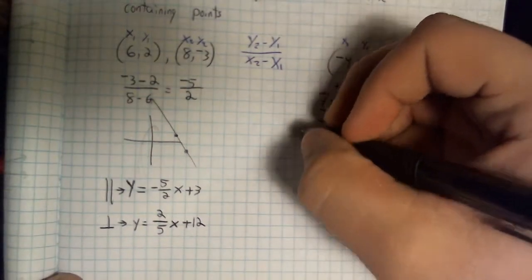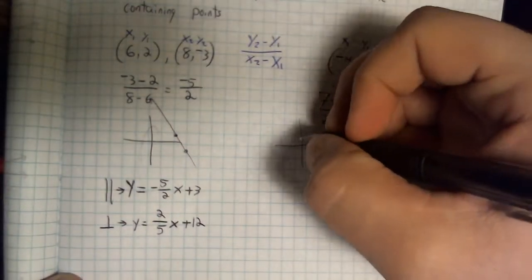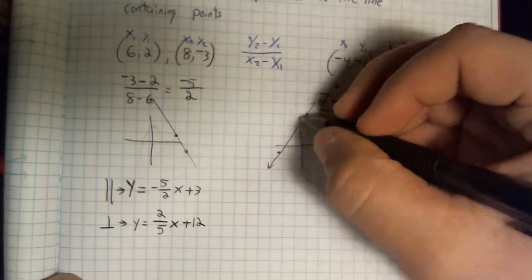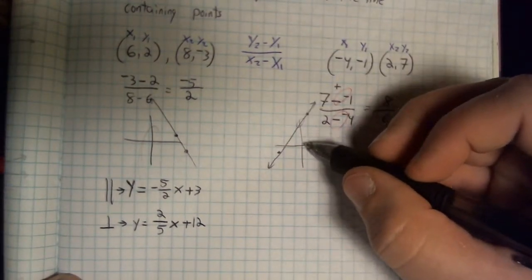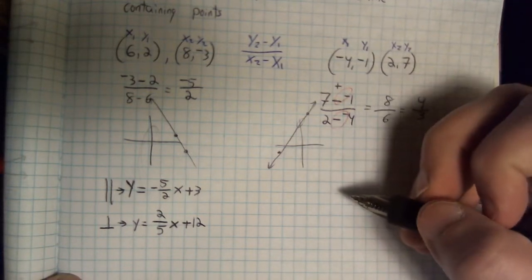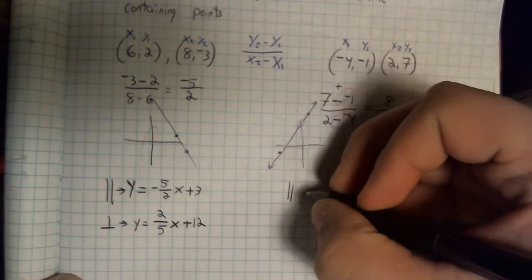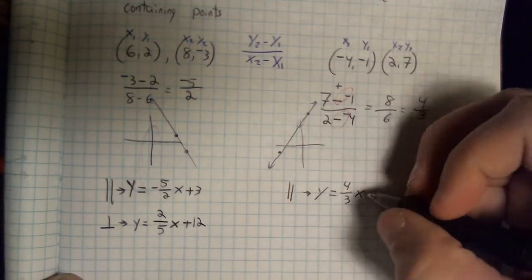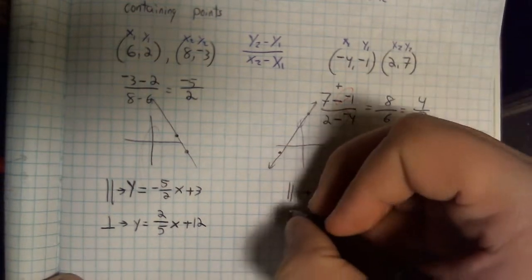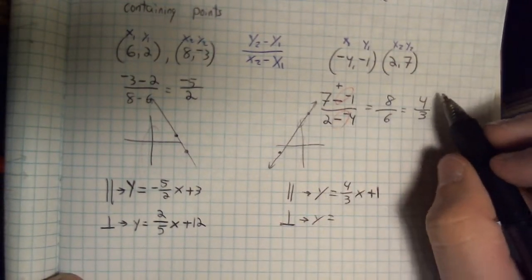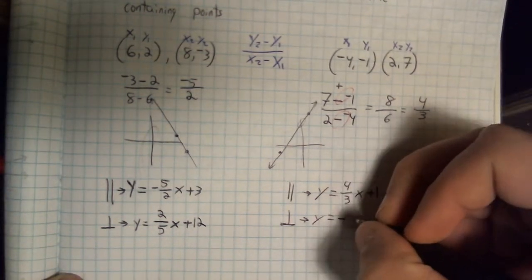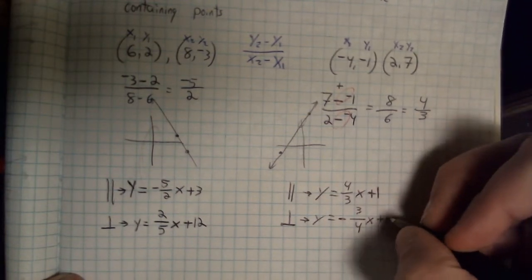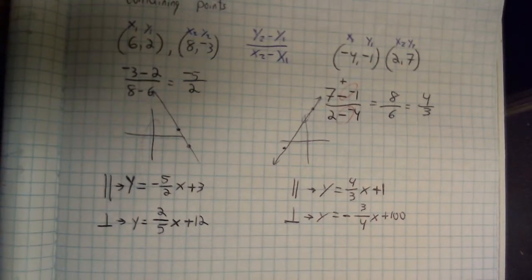Something I always suggest is seeing what this particular line looks like. Negative 4, negative 1 is here, and 2, 7 is up here. I'm willing to bet that if I choose something around 2 or lower, I should be set for my y-intercept. Parallel line: y equals same slope 4 over 3x — choose something that's not that number, plus 1 should work fine. And perpendicular: y equals — this is positive so I want the opposite sign, negative — and I want these to be upside down, so 3 over 4x. And anything I want for my y-intercept — I chose 100 because it can be any number you want.